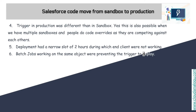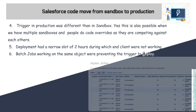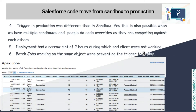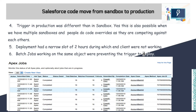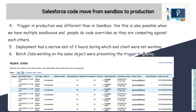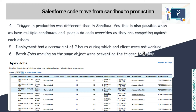Another problem we found was that the trigger in production was different from the one in sandbox. This is possible when we have multiple sandboxes and multiple teams building different features or working on the same data model. For example, two teams working on the same Opportunity object might write different triggers for that object. The trigger code in production was never pushed into the other sandboxes — a serious issue that no one ever noticed.